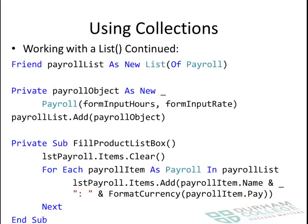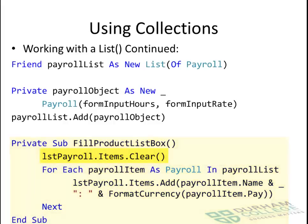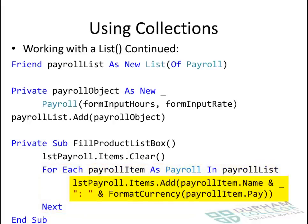Here's an example where there's a payroll list being declared. We've been working with this payroll class quite a bit, and it's fairly similar to what you've been doing in your summative labs. The bottom part of this example is important — you can see it's referencing a list box, LST Payroll. There's a method being created called Fill Products List Box. The first thing it does is remove the list of items. Then it adds items to the list box, writing in the payroll item's name, concatenating a colon, then concatenating in the pay.